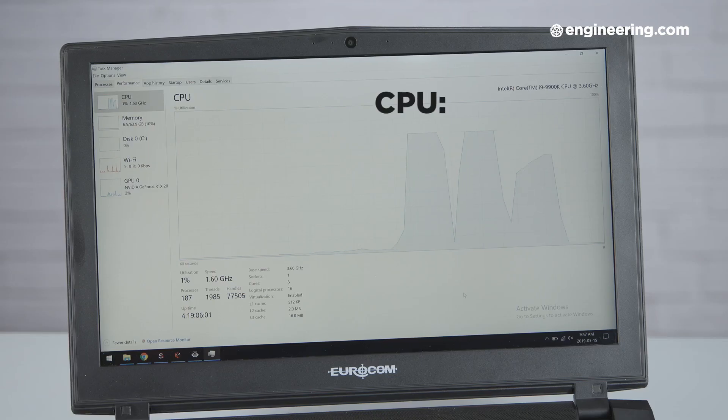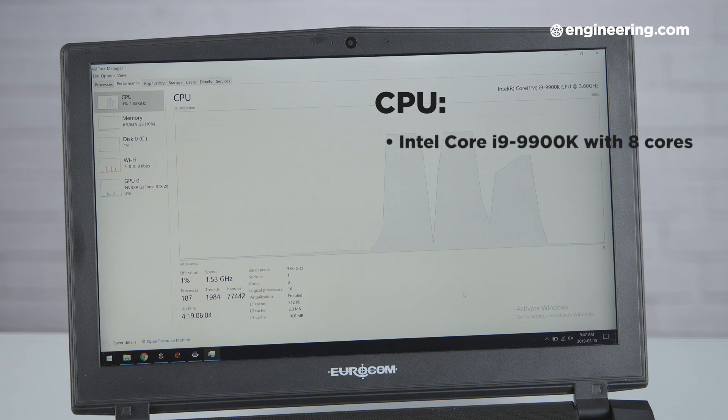The Sky X4C also offers really good CPU options, up to the Intel Core i9-9900K that we had in our unit. That's got eight cores, whereas most mobile workstations top out with a six-core processor.